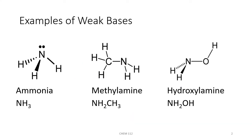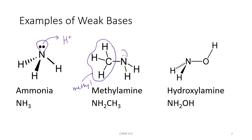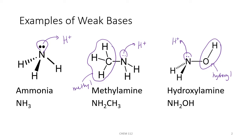Some examples of weak bases are derivatives of ammonia. Ammonia, or NH3, is a common weak base because there is a lone pair of electrons on the nitrogen that can donate those electrons and grab a proton from an acid. Methylamine, NH2CH3, is a lot like ammonia, only it has a methyl group in place of one of the hydrogens. The nitrogen still has a lone pair of electrons that will attack a proton of an acid. Another example is hydroxylamine, which has one of the hydrogens on ammonia replaced with a hydroxyl group, but the nitrogen still has a lone pair of electrons it can donate to grab a proton.